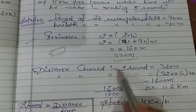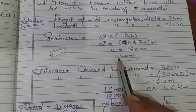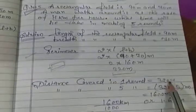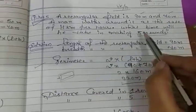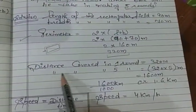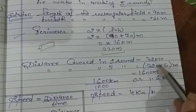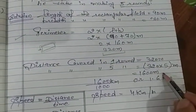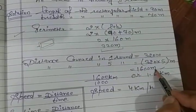Distance covered in 1 round, you know that is 320 meters. In your question you have to find about 5 rounds. First we find the distance covered in 5 rounds. When you multiply, you will get 1600 meters.